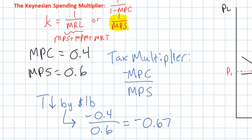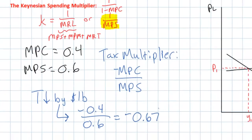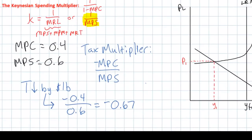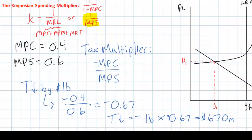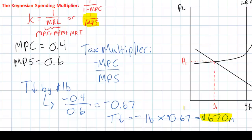What does this mean for the increase in aggregate demand resulting from a one billion dollar tax cut? If taxes fall by one billion dollars — in other words taxes change by negative one billion dollars — we multiply this by negative 0.67 to find that the ultimate increase in aggregate demand will only be 670 million dollars. A one billion dollar tax cut multiplied by the tax multiplier of negative 0.67 yields an increase in aggregate demand of 0.67 billion dollars, or 670 million dollars.